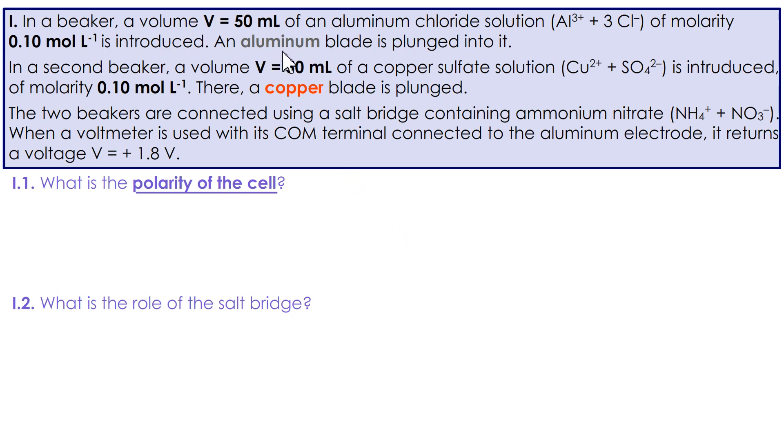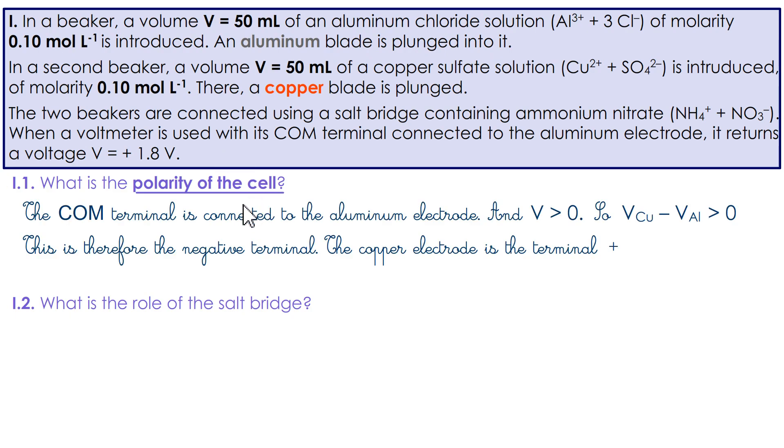Zinc is replaced by aluminum. Concentrations are given. Stop the video to read. Have you read? Let's go. You're asked, what is the battery polarity? The common terminal is connected to aluminum, and the voltage you find is positive. This allows you to say that aluminum is the negative terminal and copper is the positive terminal.